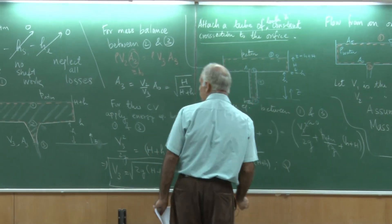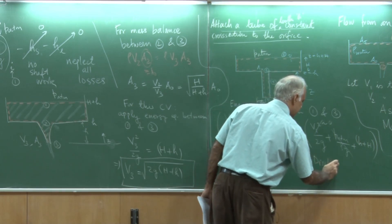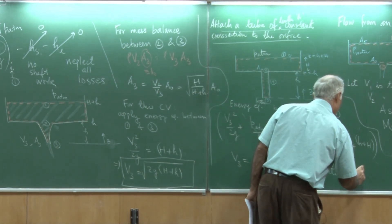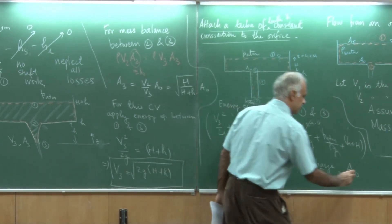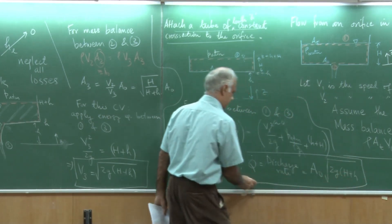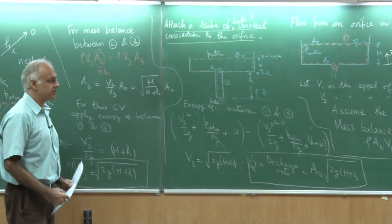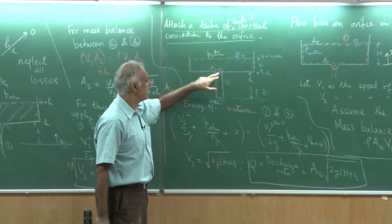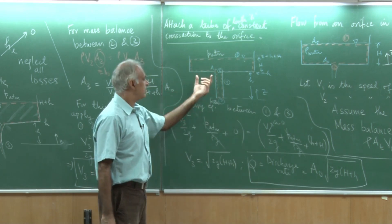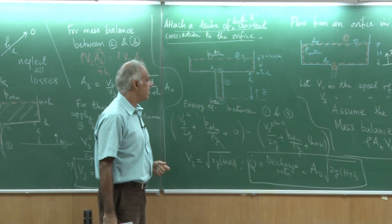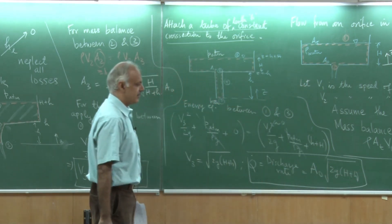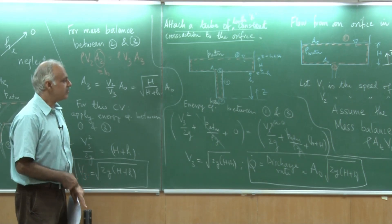Therefore, the discharge rate Q̇ is actually given as the area A0 times this velocity √(2g(H+h)). This is very interesting. If I left a tank on its own with just an orifice, I get a certain discharge rate. But if I actually attach a constant-area tube with the same diameter as the hole and let it be of height h, then I actually get a larger volume flow rate. So if you want to empty a tank, you now know how fluid mechanics can help you.